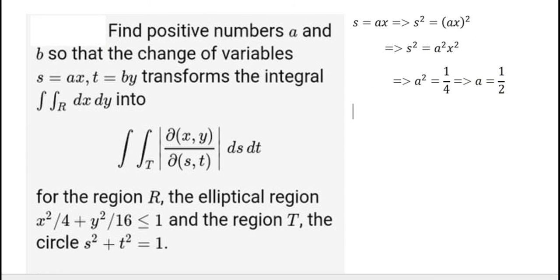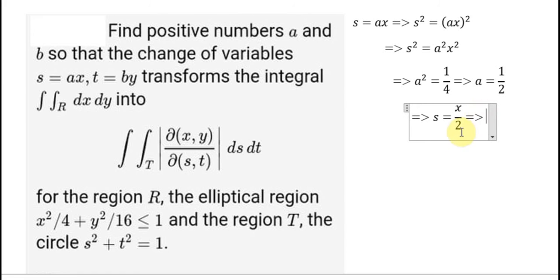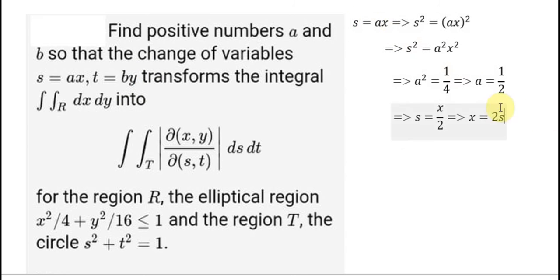So we have x equal to 2s. Similarly, with t equal to b times y, we do the same process as with x equal to as. By comparing with y squared over 16, we find b equal to 1 over 4. We need these values to set up the Jacobian transformation.